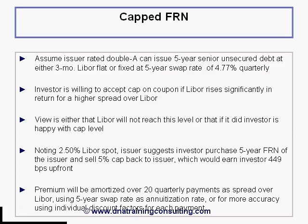A very good approximation for this calculation can be achieved by annuitizing the upfront premium over 20 equal payments, using the 5-year swap rate as the annuitization rate, or for more accuracy, by using individual discount factors for each of the 20 additional payments that will occur over the life of the instrument as a spread over LIBOR. Our next two worksheets, Annuitization 1 and Annuitization 2, show you how to do this under either approach.